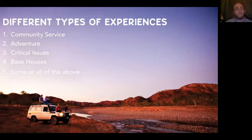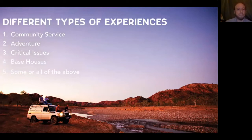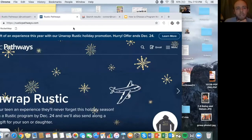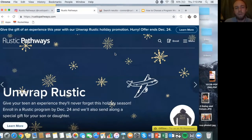Critical issues programs tend to be more academically focused, with some pre-departure readings and a lot more in-depth discussions on the program. Base houses are another really important component to think about. A base house at Rustic Pathways is housing either owned, operated, and run by Rustic Pathways — specifically built or designed to accommodate our students and hosts only Rustic Pathways students. They tend to be a little nicer accommodation, with things like air conditioning, a swimming pool, or a soccer field, and they host larger groups of anywhere between 30 and 50 students at any given time.